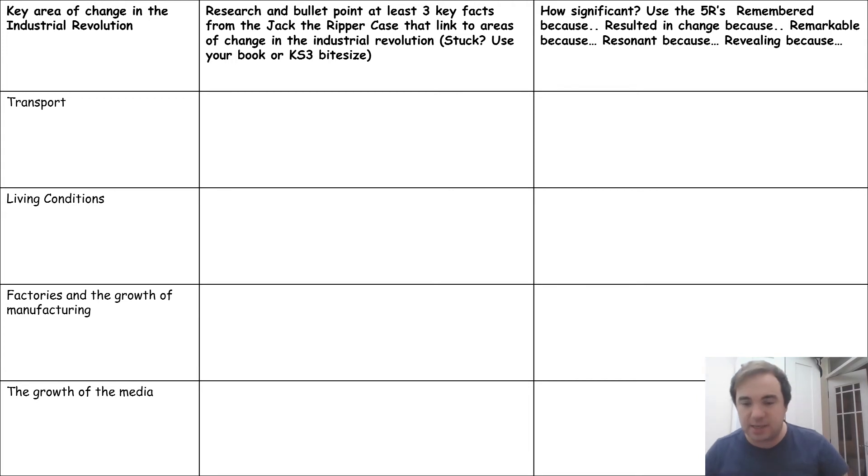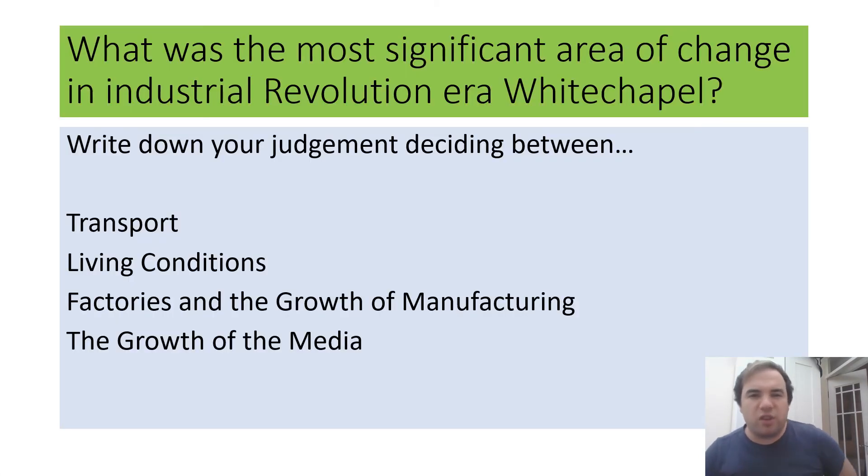Now because a few of you struggle with this I'm happy for this to sort of be two of your lessons work but if you have already completed the table then I'd like you to answer this question: what was the most significant area of change in industrial revolution era Whitechapel? So you need to write down your judgment basically deciding between what saw the most amount of change out of transport, living conditions, factories and the growth of manufacturing, or the growth of the media.